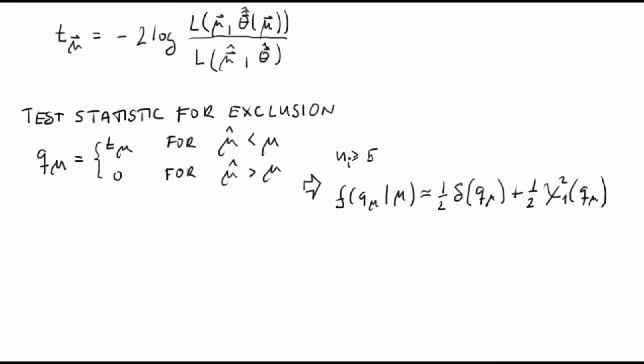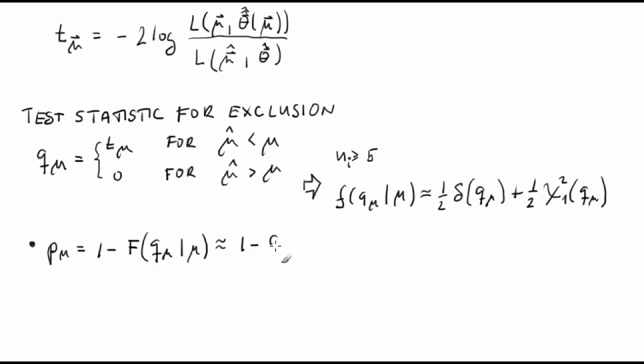Then formulae for the p-value and significance are P sub mu is equal to one minus the cumulative distribution of Q sub mu given mu and this is approximately equal to one-half of the standard Gaussian phi of the square root of Q sub mu. Z sub mu is equal to the inverse of phi of one minus P sub mu.